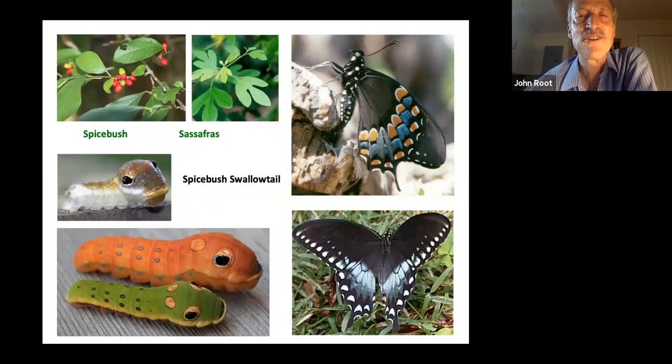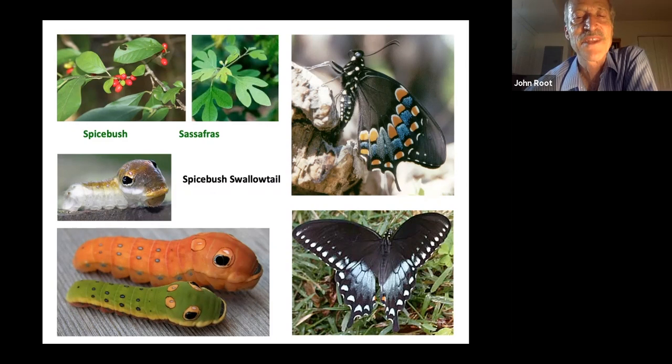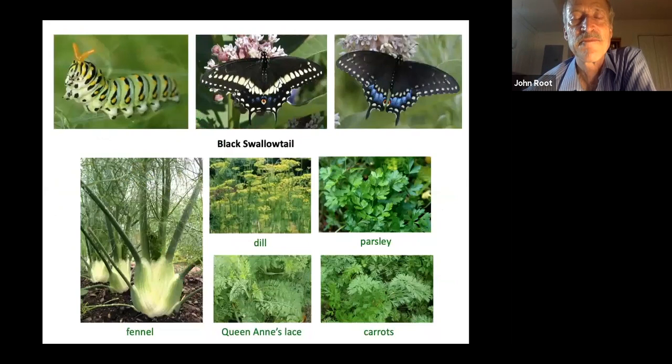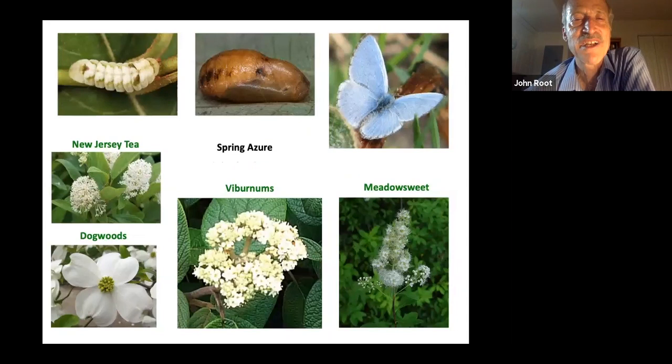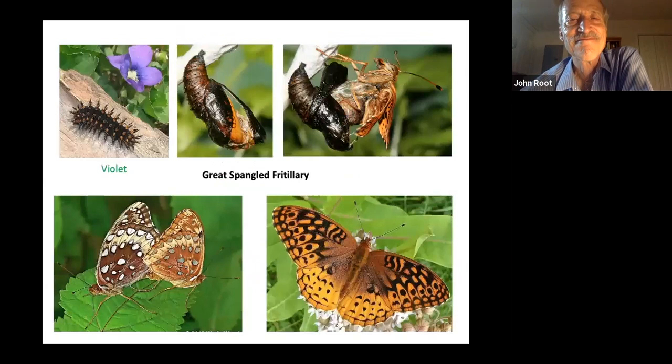There are some species of butterfly that can only use a limited number of host plants. The spicebush swallowtail female will only lay her egg on either a spicebush leaf or a sassafras leaf, because those are the only two species that the caterpillar is able to feed on. The black swallowtail will feed on any of the members of the parsley family: parsley, dill, carrots, fennel. The Baltimore checkerspot caterpillar feeds on leaves of turtlehead and plantain, and the host plants for the spring azure are New Jersey tea, viburnums, meadowsweet, and dogwoods.